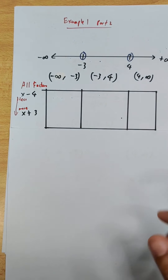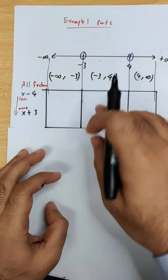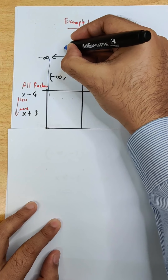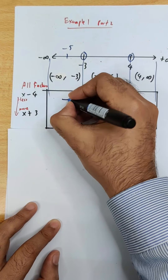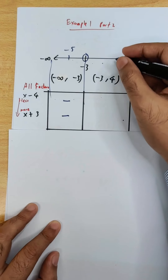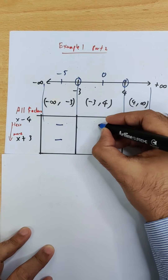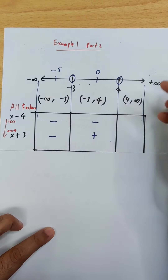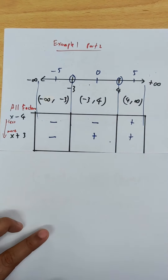Now choose a number in the interval from negative infinity to negative 3 — say negative 5. Substituting: negative 5 minus 4 gives negative 9 (negative), and negative 5 plus 3 gives negative 2 (negative). For the interval negative 3 to 4, choose 0: 0 minus 4 is negative 4 (negative), 0 plus 3 is positive. For 4 to infinity, choose 5: 5 minus 4 is positive, 5 plus 3 is positive.